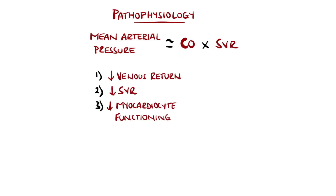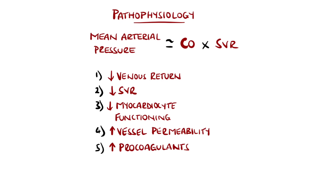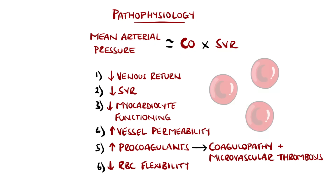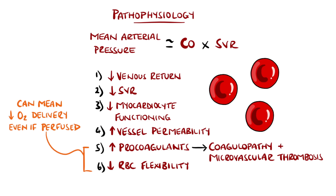Sepsis features increased vessel permeability, so fluid can extravasate and further reduce the circulating volume. There is also an increase in procoagulant factors and a reduction in anticoagulants, which generates a coagulopathy. Ultimately, this results in formation of thrombi, particularly in the smaller vessels, further impairing blood flow through the capillaries to the tissues. Red blood cells can even become less flexible and so cannot as easily deliver oxygen to the tissues — meaning even if an organ is perfused, delivery of nutrients and oxygen can still be impaired.